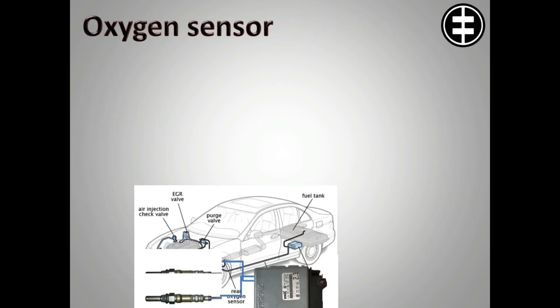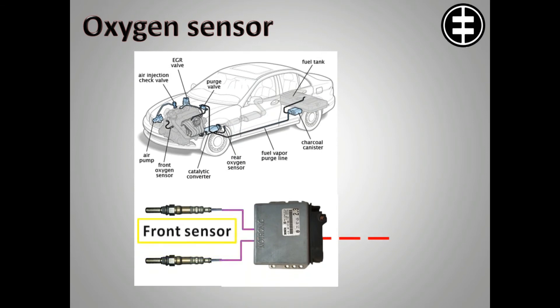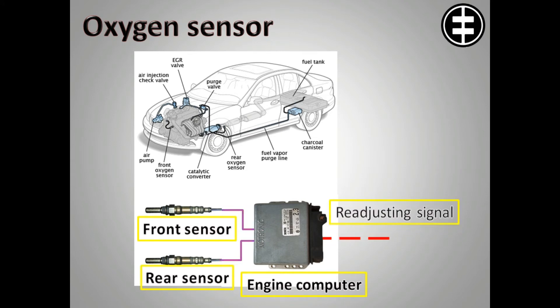An oxygen sensor in a car's emission control system detects the gasoline-oxygen ratio, usually through a chemical reaction that generates a voltage. A computer in the engine reads the voltage and, if the mixture is not optimal, readjusts the balance.